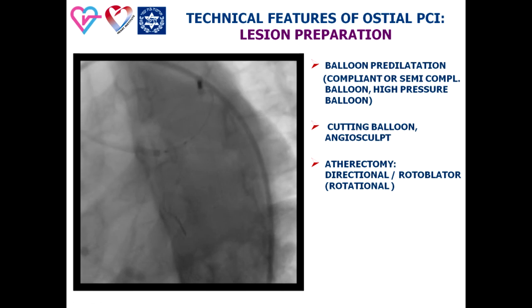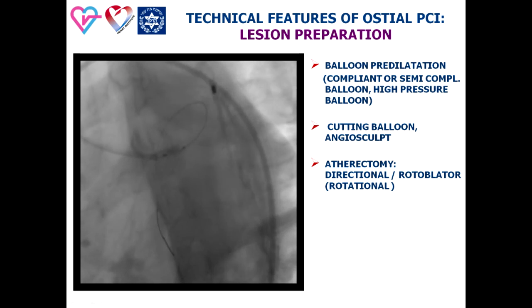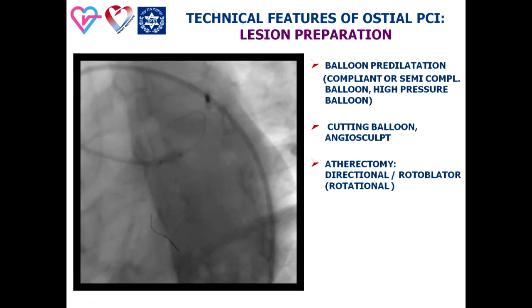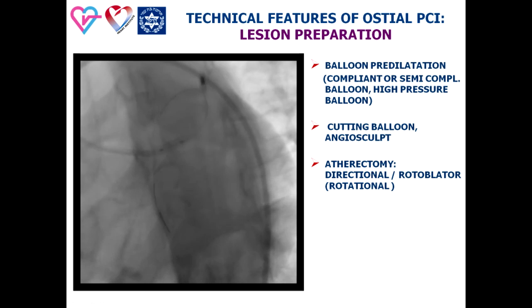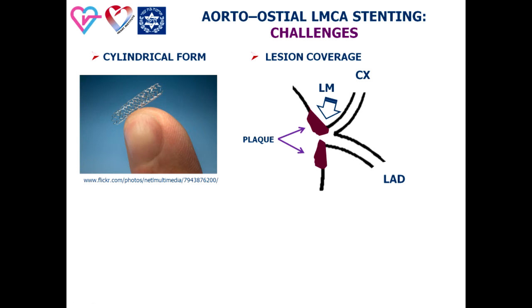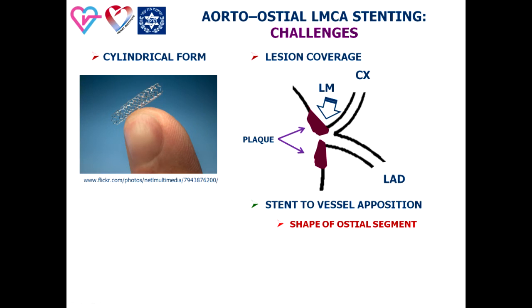Lesion preparation is an obligatory part of PCI in the ostial left main segment in the majority of cases. Use of higher-pressure balloon inflation or debulking is currently a common approach. Stent implantation in the aorto-ostial location is technically challenging. Aorto-ostial lesions are as a rule primary aortic disease widespread to the left main. The stent has a cylindrical form and must not cover the aortic part of the lesion.